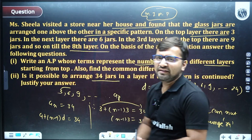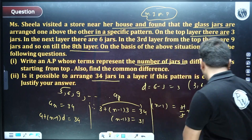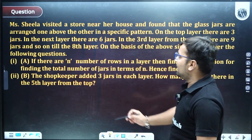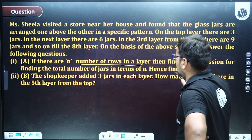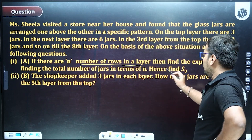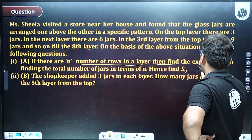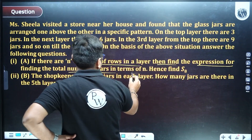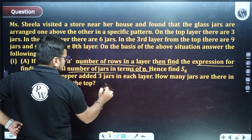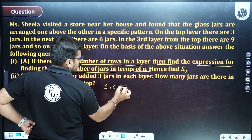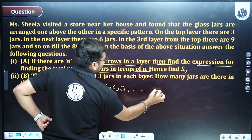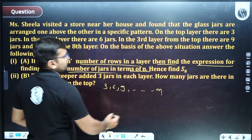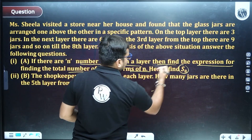Since n−1 = 31/3 is not a natural number, we cannot arrange 34 jars in this pattern. Either 33 or 36 can be arranged, as only multiples of 3 are valid. Next, if there are n rows, find the expression for the total number of jars in terms of n, then find S8.